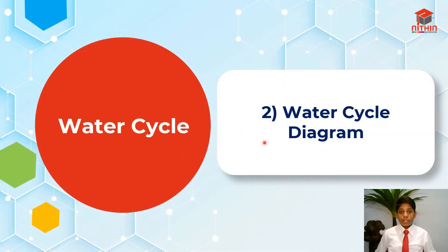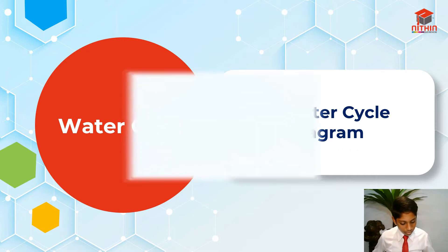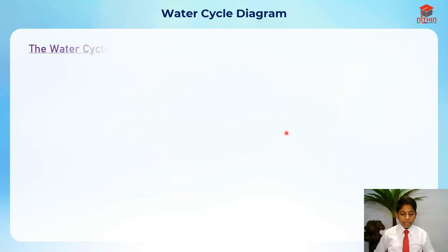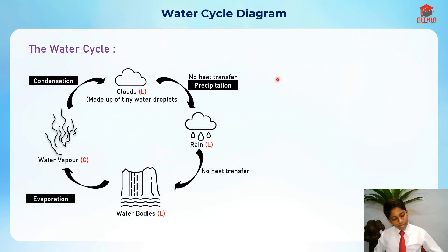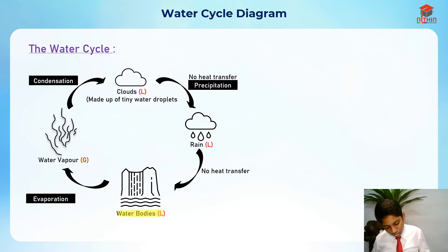For the second segment of this video, I am going to go through the water cycle diagram. Let's take a look at it and understand it better. For the water cycle diagram, it starts over here at the water bodies. From the water bodies, it actually goes on to evaporate.